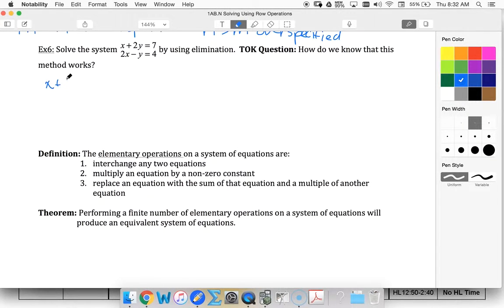So I've got x plus 2y equals 7. I'm going to take that and multiply it by 2. 2x plus 4y equals 14. So thinking about our TOK questions, how do we know this method works? How do we know that this is okay to do?